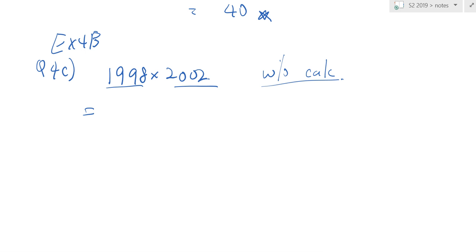I have 3 special products: either A plus B square, A minus B square, or A square minus B square. Since this is something times something, I can break it up into something times something. And what am I looking at? I'm actually looking at A plus B, A minus B.